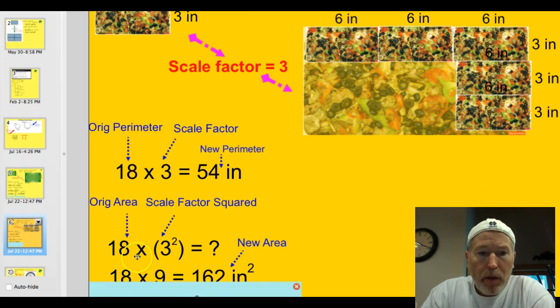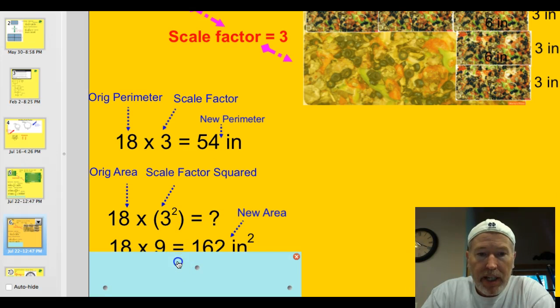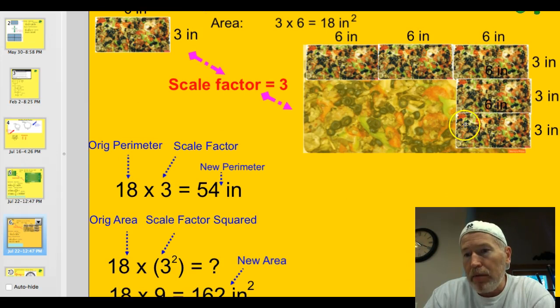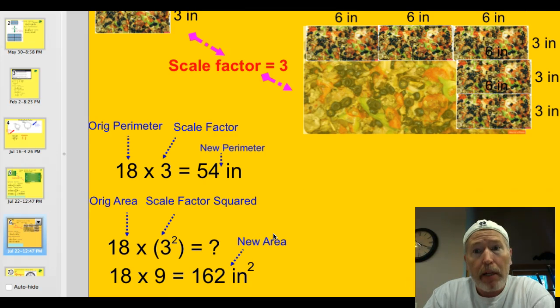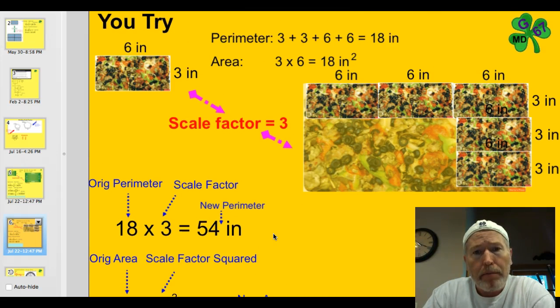Well, the original area was 18. We're going to take that times the scale factor squared. So I'll simplify that scale factor. So now we have 18 times 9, which gives us 162 inches. And once again, you can see how that comes about. Because we've got 9 inches over on this side multiplied by 18 inches. We did it mathematically without having to draw it out using the scale factor. Nice work.